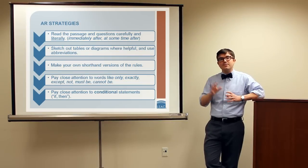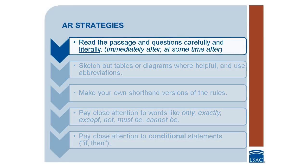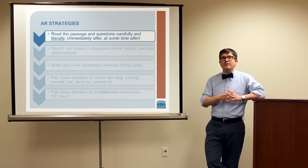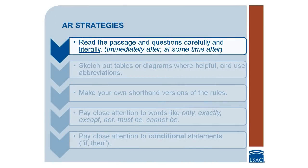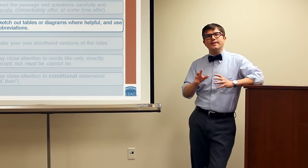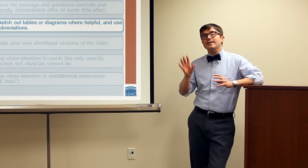Let's talk briefly about some tips for approaching the analytical reasoning section of the test. First, read the passage and the questions carefully and literally. For example, consider the words 'immediately after' and 'at some time after' — these mean subtly different things. If you encounter the words 'at some time after' in an analytical reasoning scenario, it would be a mistake to assume we mean 'immediately after.' Second, sketch out tables or diagrams where helpful and use abbreviations. Diagrams can be helpful in understanding the relationships being described, and abbreviations can serve as useful shorthand in those diagrams.